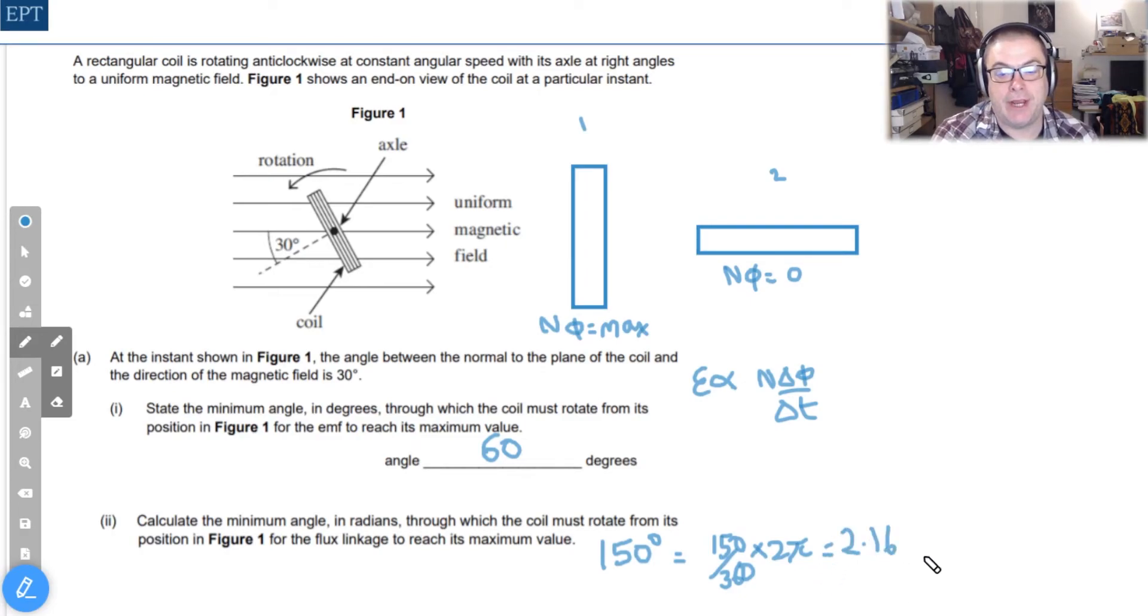When you work that out you get 2.6 radians, and if you want that as a fraction it's 5/6 π radians.